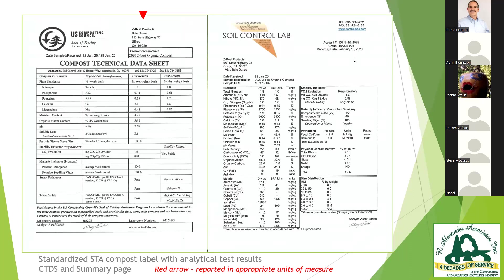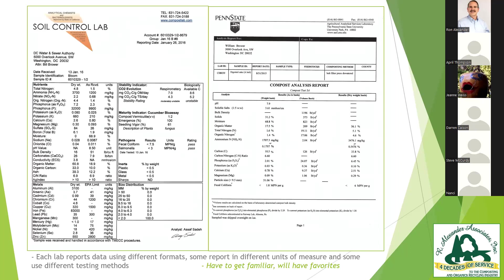Here's a good example of how the composting industry has been able to standardize — they have a national testing program where there's a standardized label. The red arrow shows how the data is properly expressed. You'll notice the arrow is on the wet weight basis for nutrients, while organic matter content is on a dry weight basis. Over to the right is just another version of that same test, a summary of all the other data written out in long form.